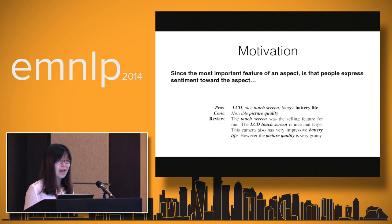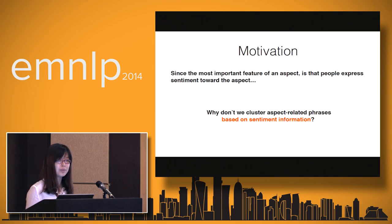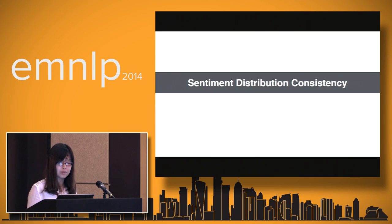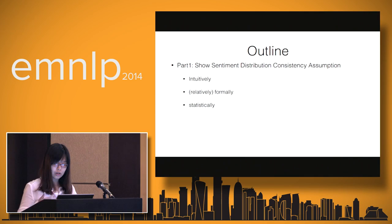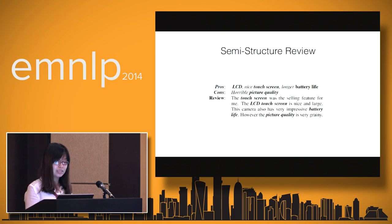However, since the most important feature of an aspect is that people will express sentiment towards that aspect, and we can see from semi-structured reviews that we can collect sentiment information about the aspect, why don't we cluster aspect-related phrases based on sentiment information? Here I will introduce the sentiment distribution consistency, which is the most important concept in this paper. First I will show you the assumption and then the formalization. I will take an example, declare the assumption formally, and then verify it statistically on our dataset.